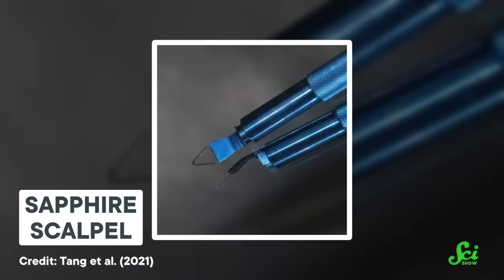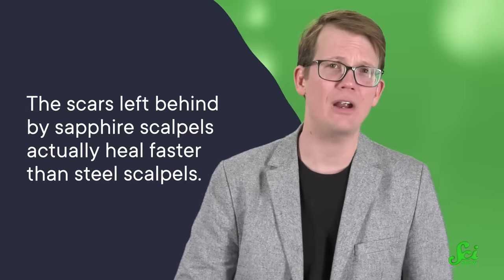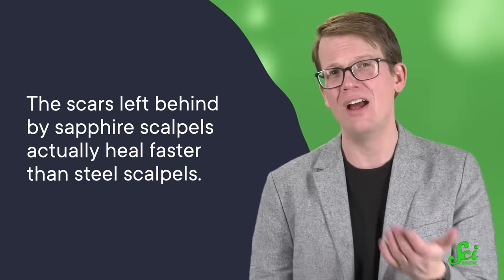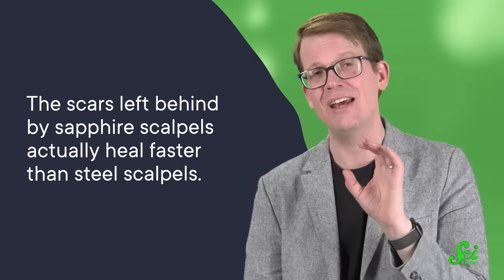For instance, certain surgical scalpels have sapphire blades with an edge radius as thin as 25 nanometers, which is only a couple hundred atoms in width. And with a blade that sharp, the scars left behind by sapphire scalpels actually heal faster than steel scalpels thanks to the incredibly precise clean cuts it leaves in the skin. Plus, being made of hard sapphire and all, the blades are also super durable.